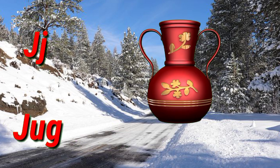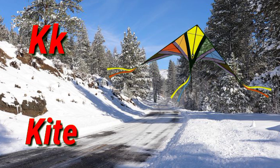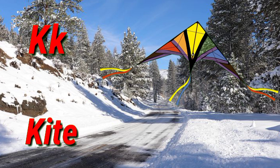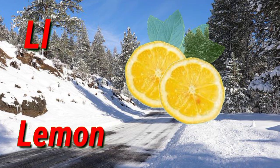J. J for jug. Jug means jug. K. K for kite. Kite means patang. L. L for lemon. Lemon means nimbu.